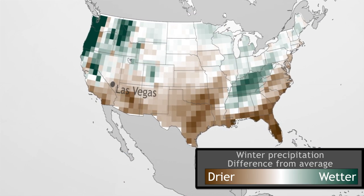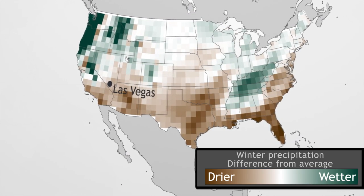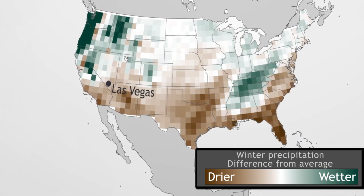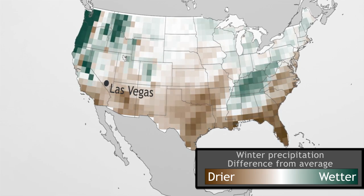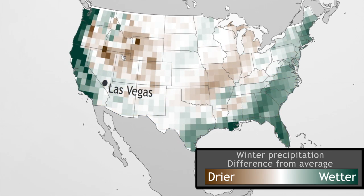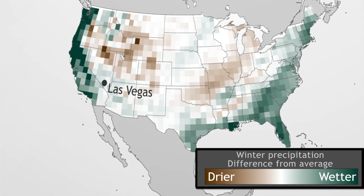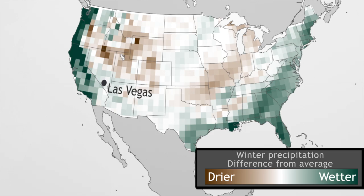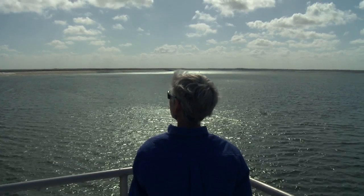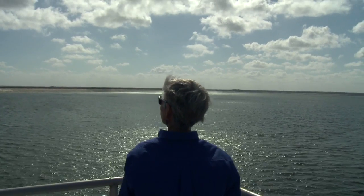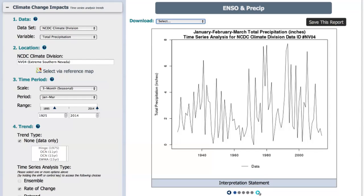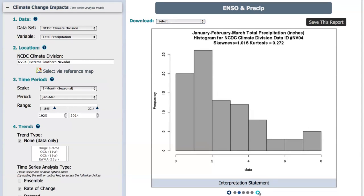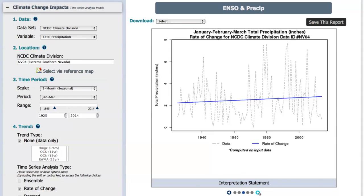Here in Las Vegas, Nevada, La Niña events bring an elevated chance of drier-than-normal precipitation, while El Niños bring an elevated chance of wetter-than-normal conditions. If you're a city planner or water utility employee, you could use this climate information to evaluate important decisions.